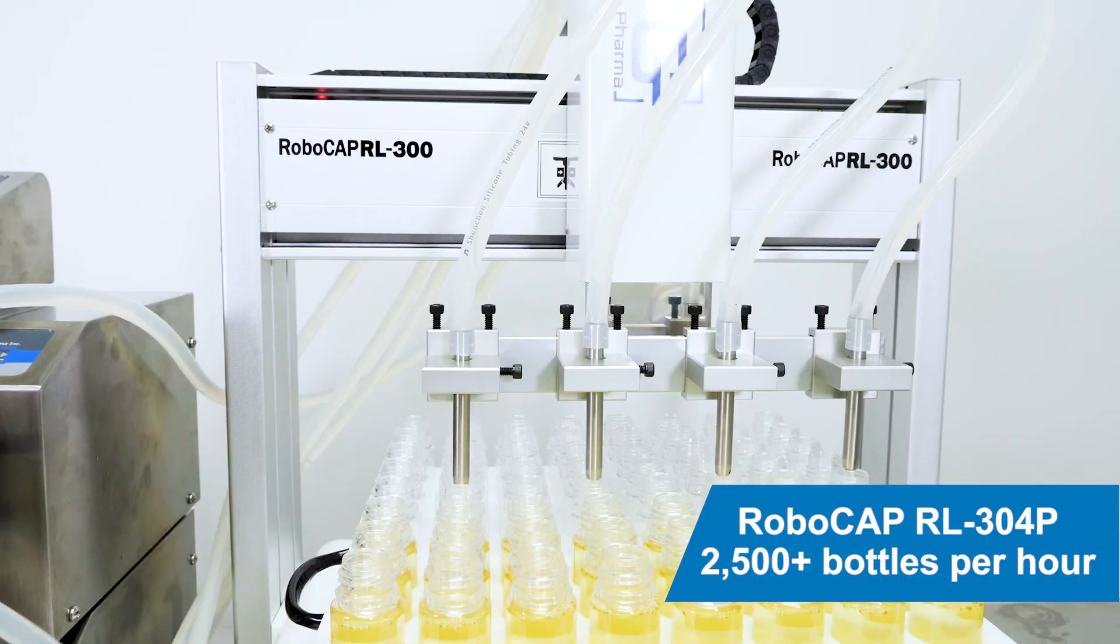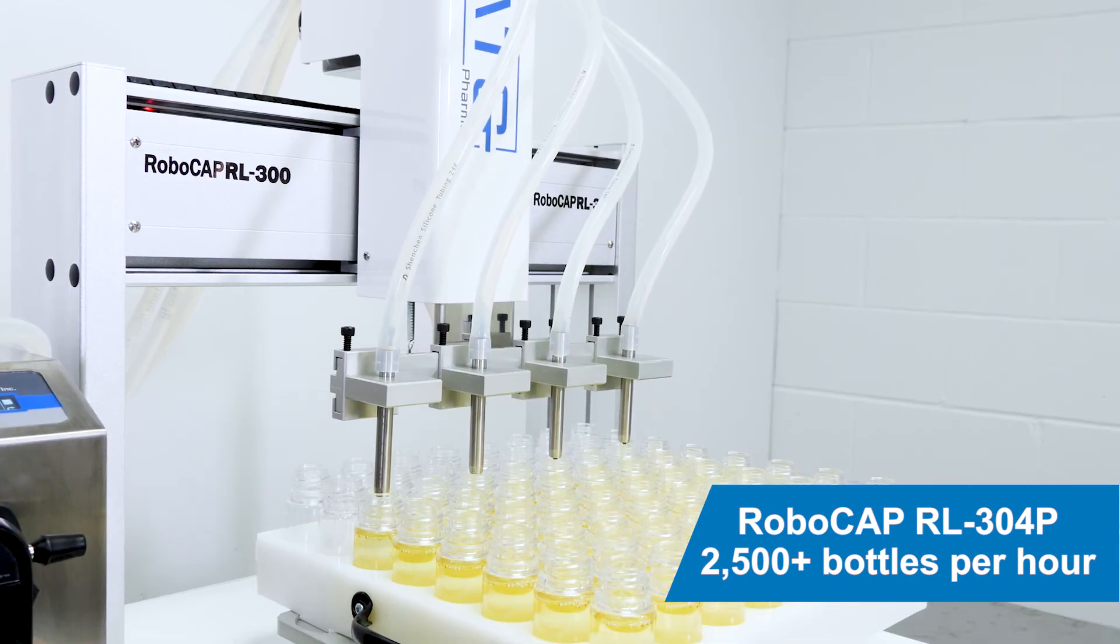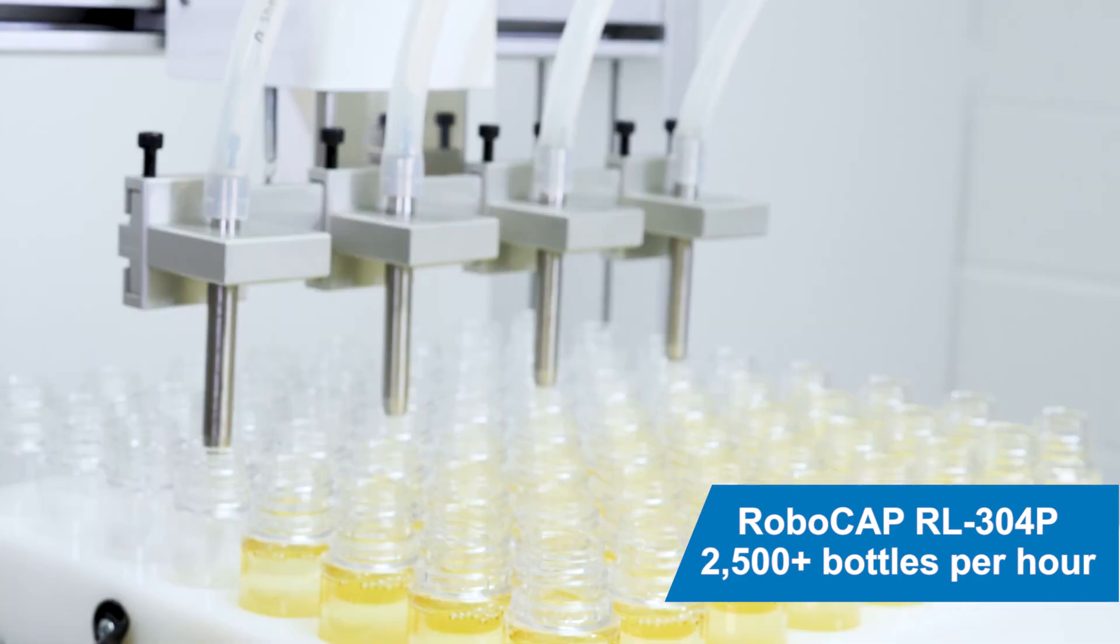The benefits of the RoboCab 300P series is that you do not need a pressurized system to dispense your product. The only product contact parts are the nozzle tip and the product tubing.